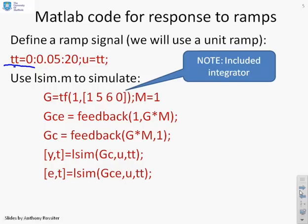And then what I've done is said, what do I need to use lsim? So I've defined the transfer function G and you'll notice I've included an integrator. So G equals tf 1, 1, 5, 6, 0. Compensator of 1. I've defined the transfer function between the ramp and the error, that's feedback 1, GM. The transfer function between the ramp and the output, that's feedback G times M, 1. And then I've used lsim to calculate the corresponding outputs and errors.